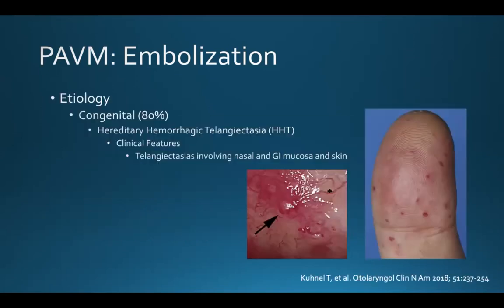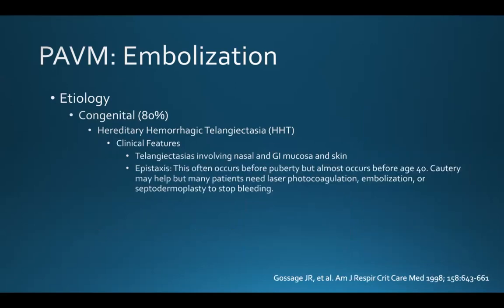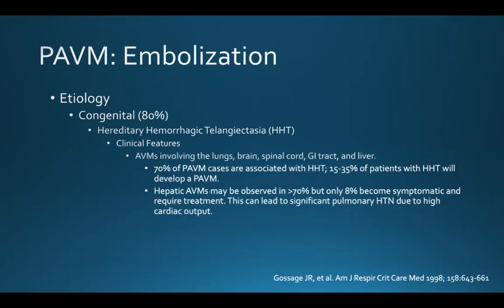The clinical features of HHT include telangiectasias involving nasal mucosa, GI mucosa, and skin. In addition, epistaxis is a prominent feature of HHT. This often occurs before puberty, but almost always before age 40. Cautery may help these patients, but many patients need more advanced procedures such as laser photocoagulation, embolization, or septodermoplasty to stop bleeding. And, of course, AVMs are a prominent feature of this disease.